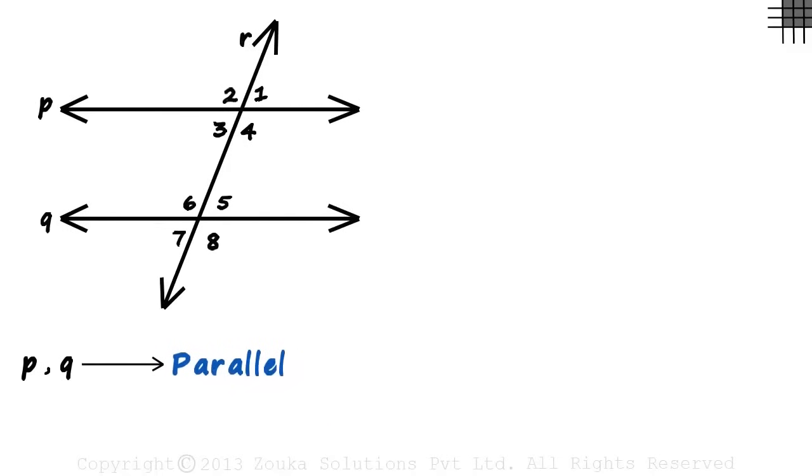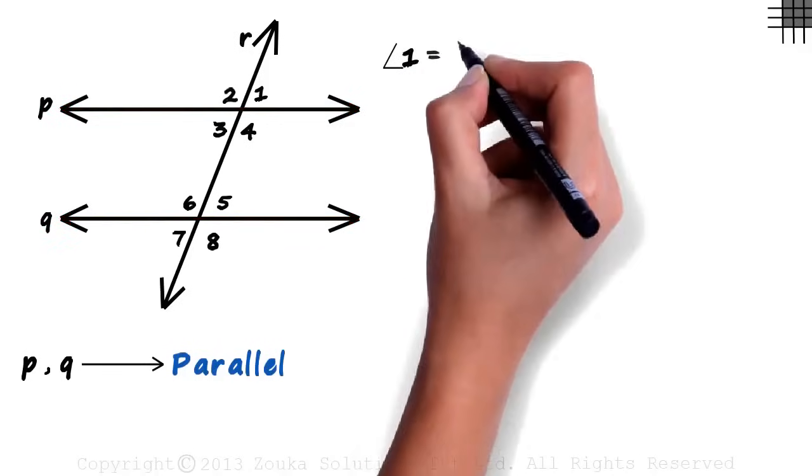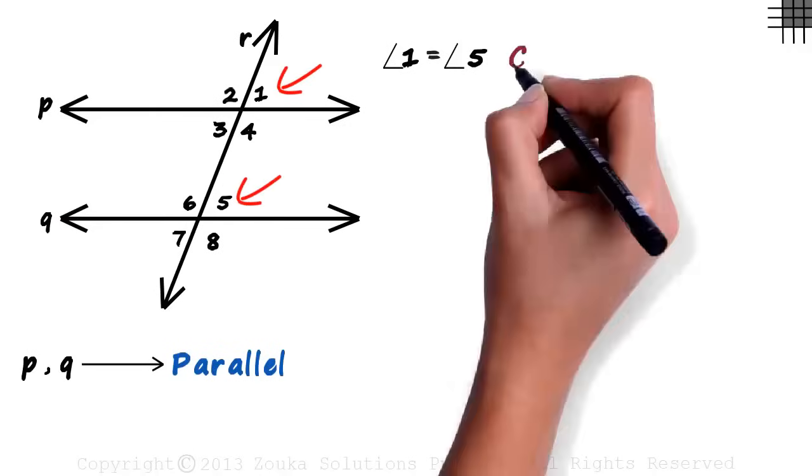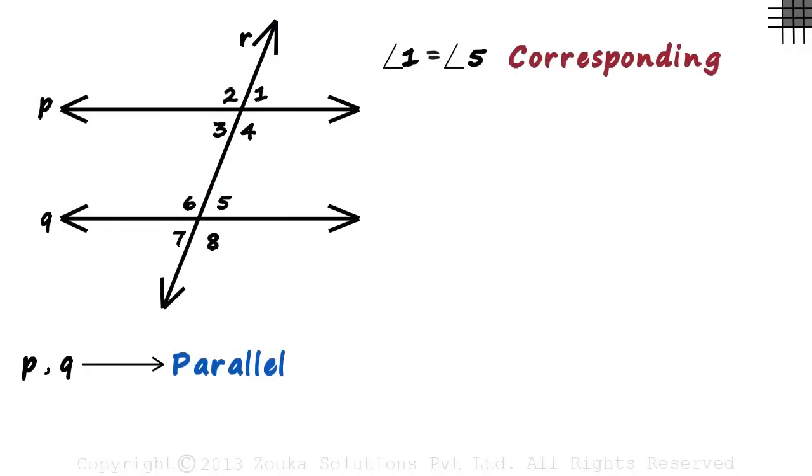Let's move on to the first type of angles. If lines P and Q are parallel, then angle 1 will always equal angle 5. This angle here will be equal to this one. They are called corresponding angles. It doesn't matter how the transversal is placed, these angles will always be equal.